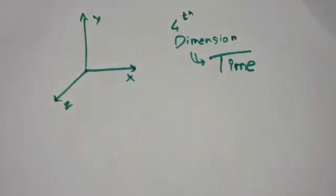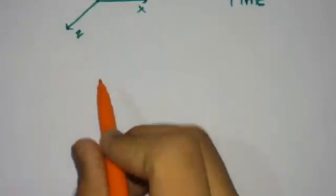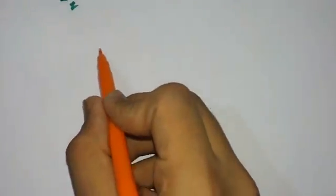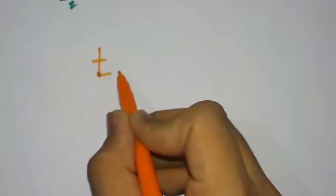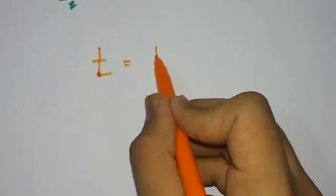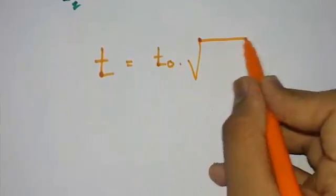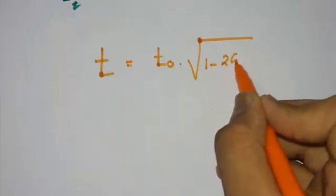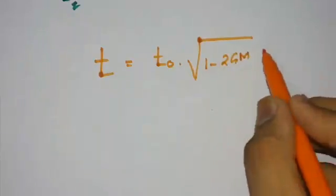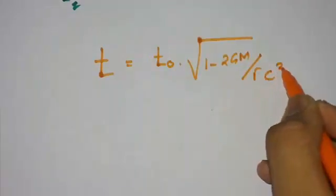Now you can see the time plane. You must be thinking: what is the formula for gravitational time dilation, or gravity stretching time? The formula is: t equals t-naught times the square root of 1 minus 2GM divided by r times c squared.